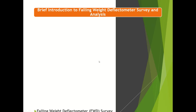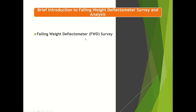Let's start with the Falling Weight Deflectometer survey. It is an alternative for the Benkelman Beam Deflectometer survey, which we used to do earlier to find out the overall thickness using MSC. That was entirely static — we used to stop the truck and take deflection readings. But FWD is entirely dynamic: the vehicle moves and the instrument automatically records deflections.